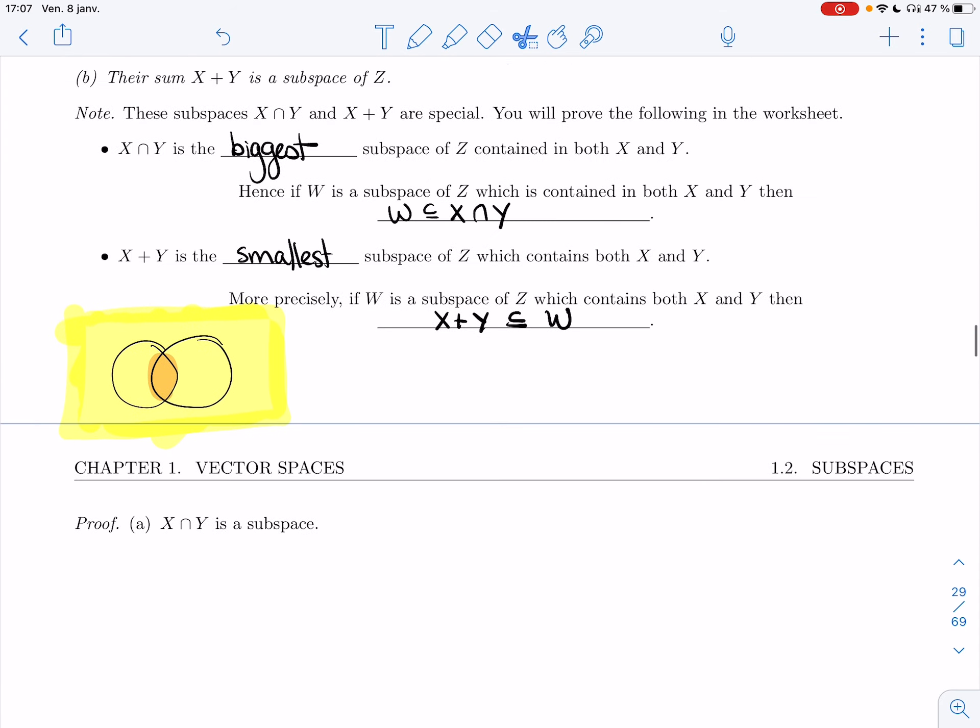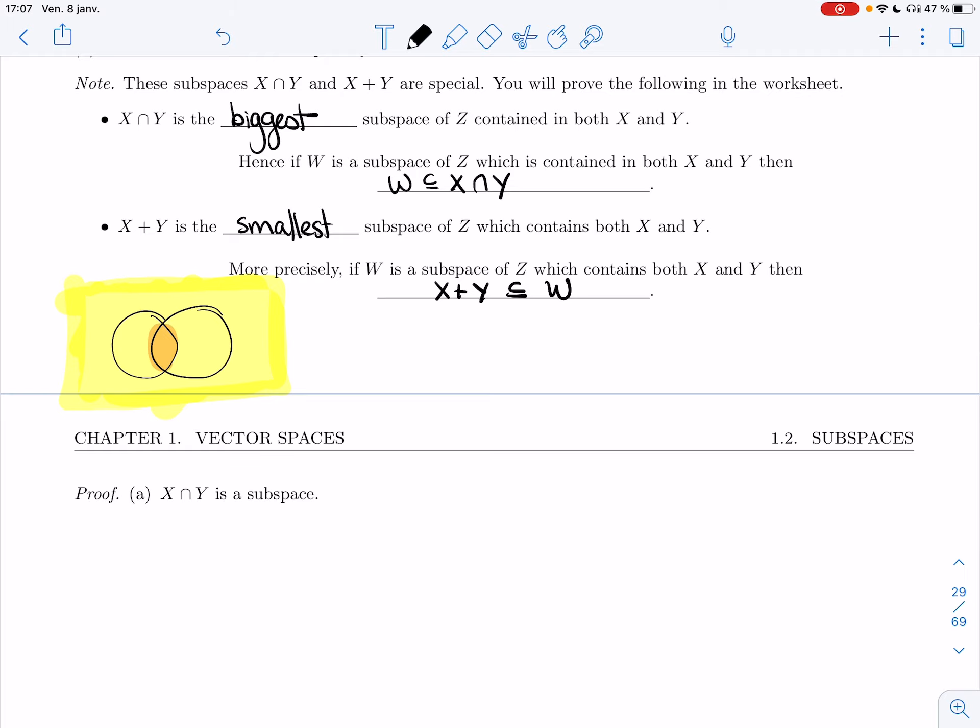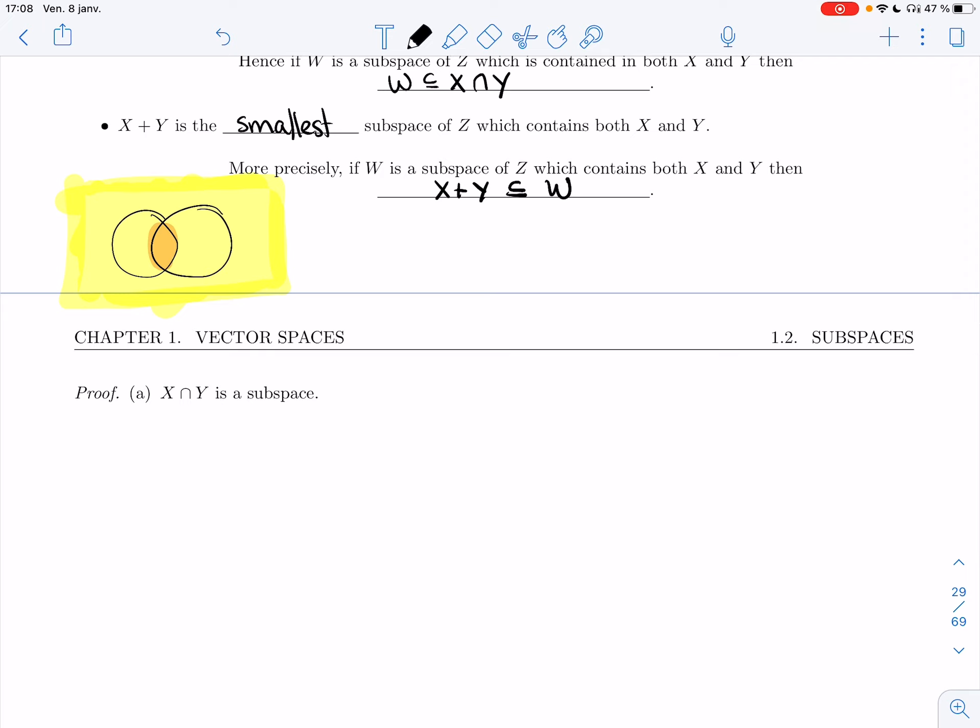So you'll do the note in the worksheet. Let's prove that X intersection Y is a subspace. We'll prove the three properties, but we will assume that the three properties are true for X and for Y. We'll assume that the three properties are true for X and Y, and we will prove them for X intersection Y.